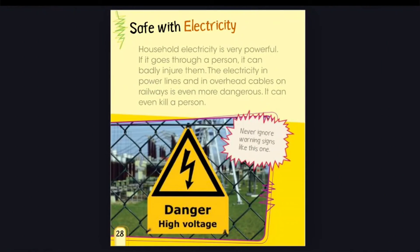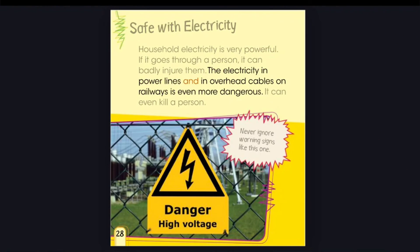Safe with Electricity. Household electricity is very powerful. If it goes through a person, it can badly injure them. The electricity in power lines and in overhead cables on railways is even more dangerous — it can even kill a person. Never ignore warning signs.